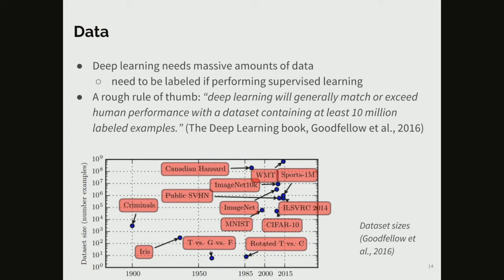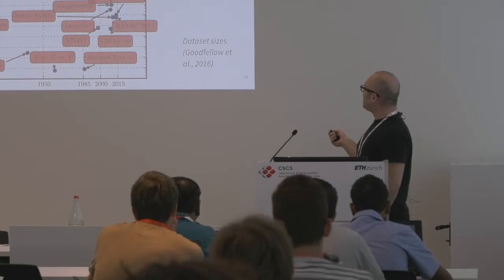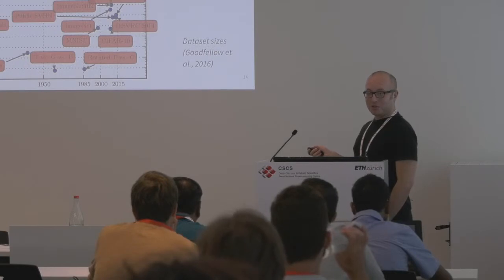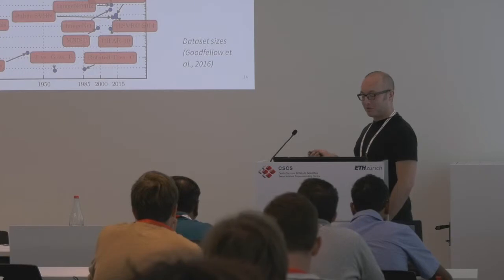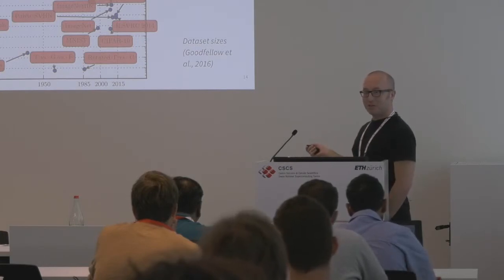Another important thing in deep learning is data. This is one of the reasons these neural network architectures were not performing well back in the 1980s and 90s — they didn't have enough data. Now big companies have this data, which is actually why these companies are big players in deep learning. You need millions and millions of labeled data for supervised learning. The deep learning textbook says you need at least 10 million labeled examples to be anywhere near human performance for any task — one of the biggest limitations.